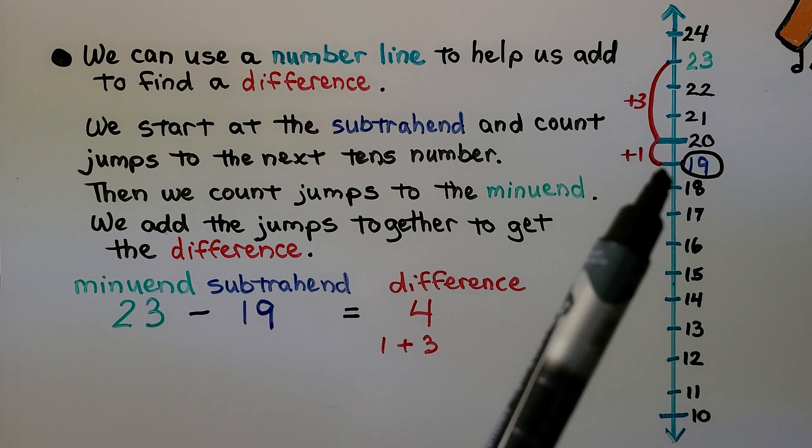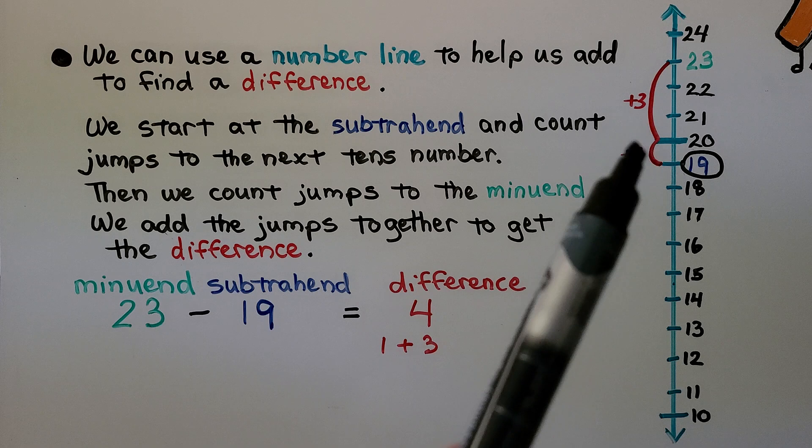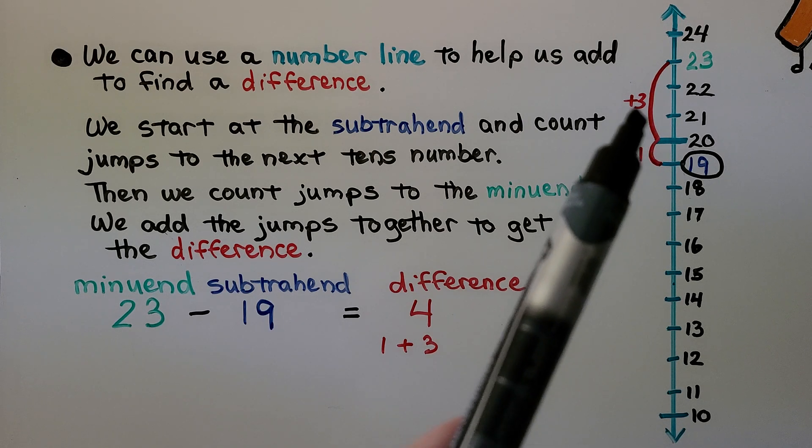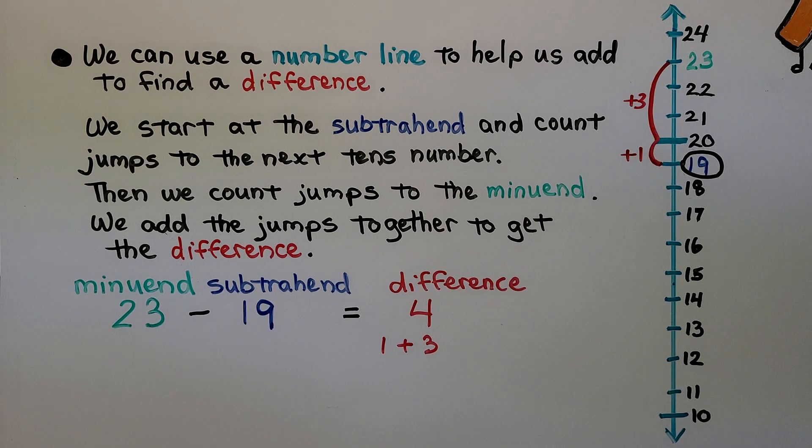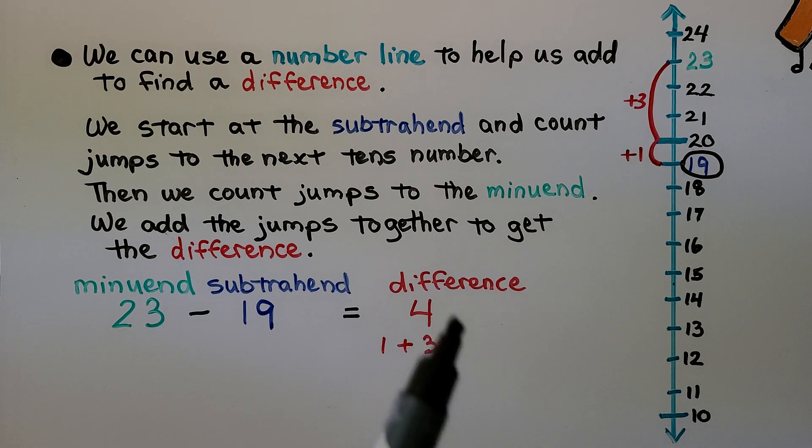We start at the subtrahend 19 and count a jump to get to 20, the next tens number. Then we count jumps to the minuend. 1, 2, 3. We add the jumps together. 1 plus 3 is 4. And that will get us our difference. 23 minus 19 is equal to 4.